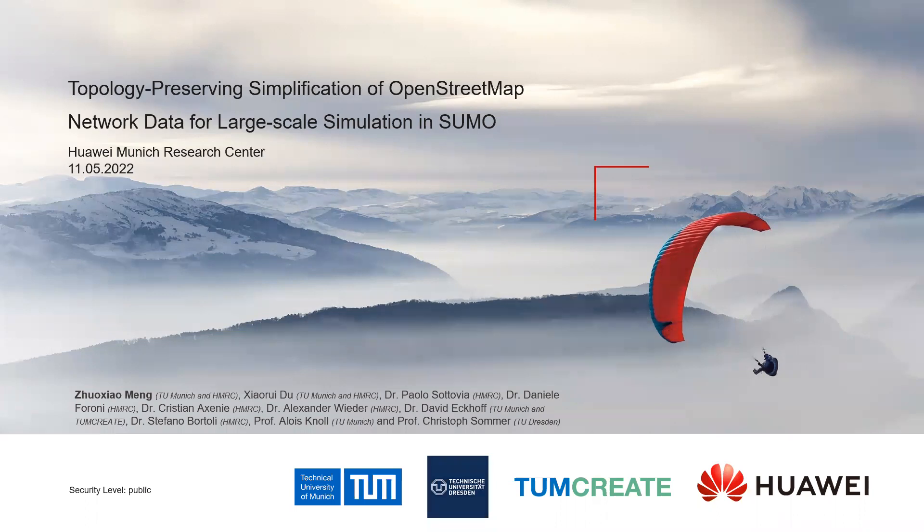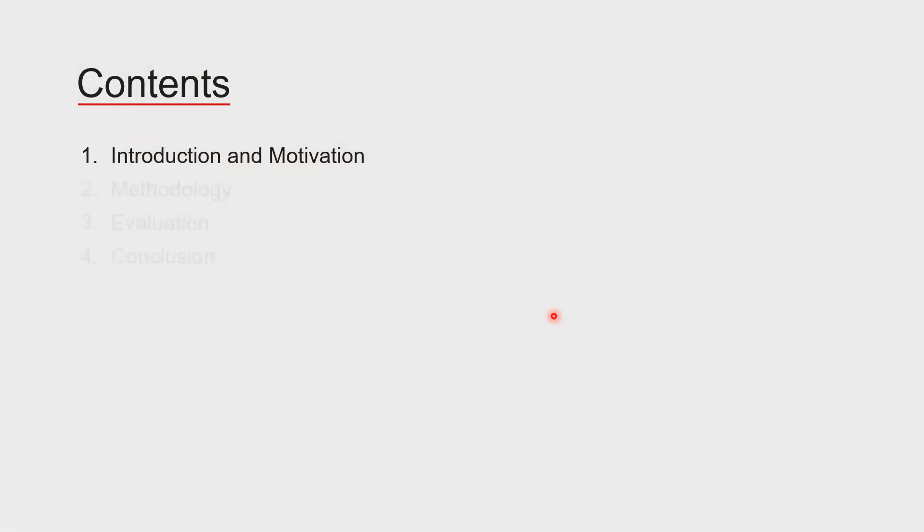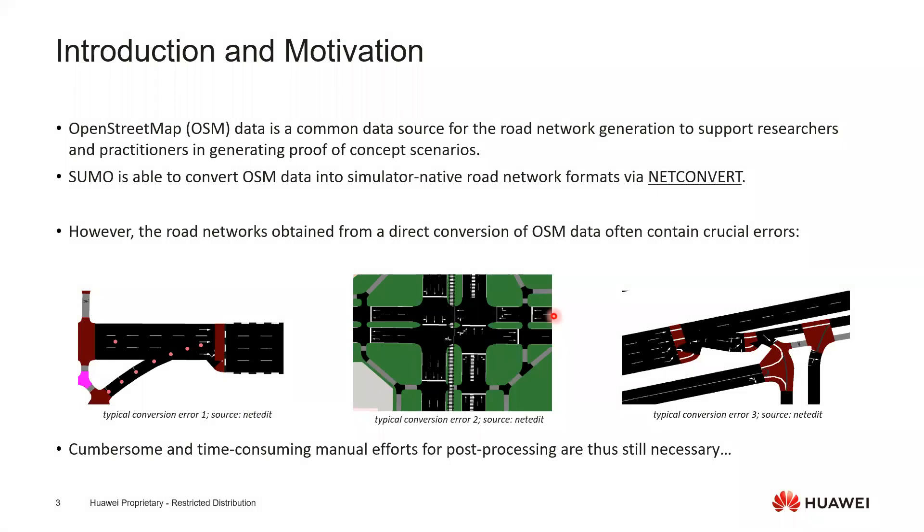First, I would like to do a rapid introduction and introduce our motivation for why we want to do a network generator. Basically, we know that OpenStreetMap data is a very common data source to use for generating traffic simulation road networks, and Zumo is able to convert it via NetConvert.